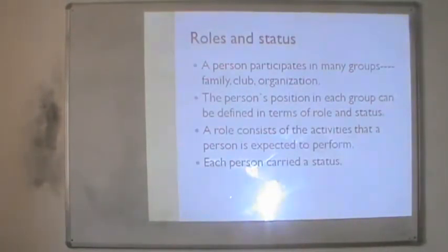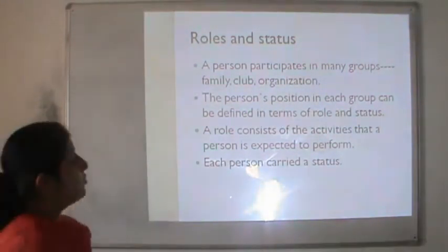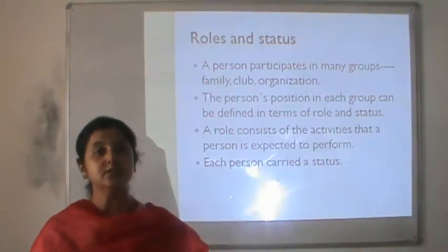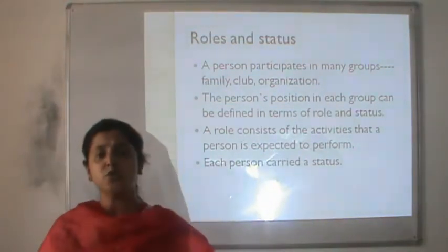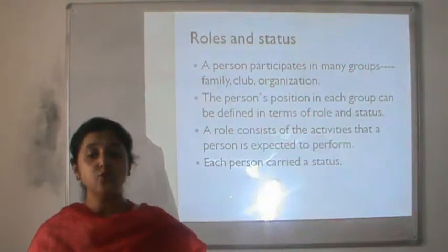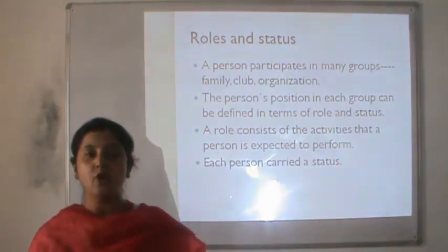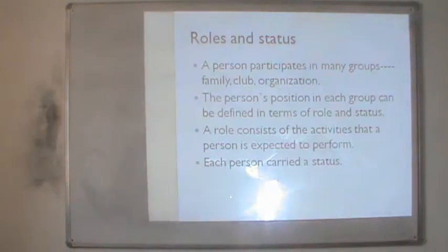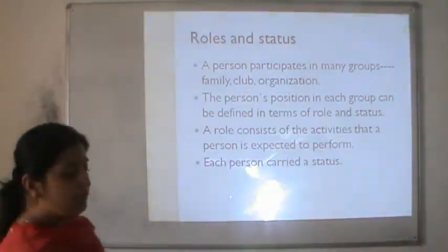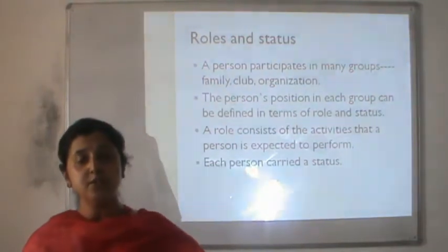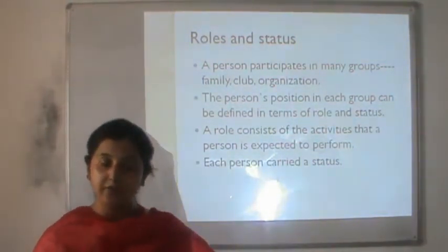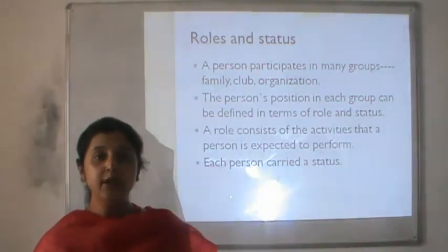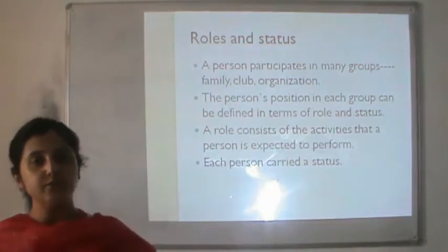Roles and statuses: every person in society has a certain role to perform and therefore a certain status. A CEO has different status and therefore requires different types of clothes, a different car or mobile. A supervisor at the shop floor has a different status and uses different brands. A person going to a business meeting chooses different clothing than when going out with friends, which makes it easier for a company to target consumers according to the context for the clothes they are selling.